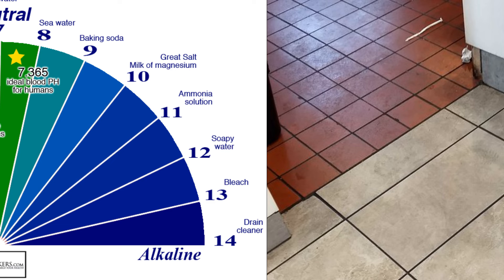Most alkaline-based cleaning products are aggressive cleaners with high pH values of 12 or above. They are designed to react aggressively with dirt, grease, and other organic grime commonly found in grout lines.